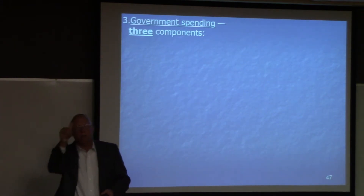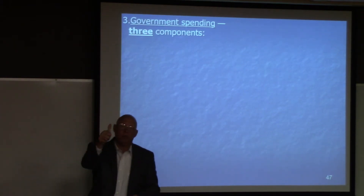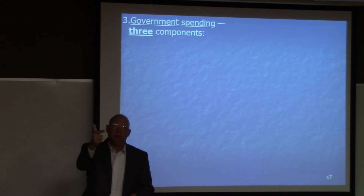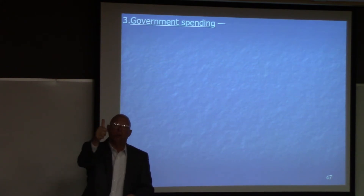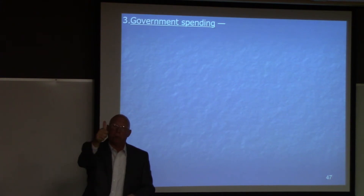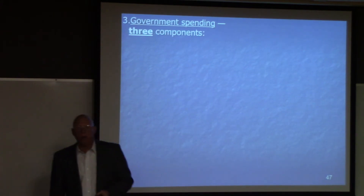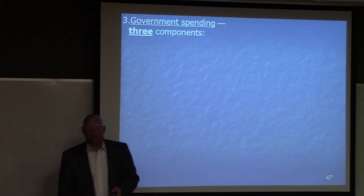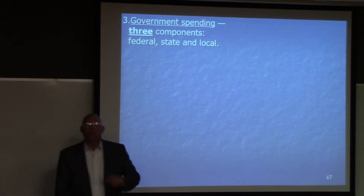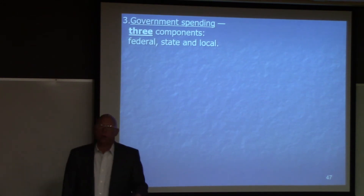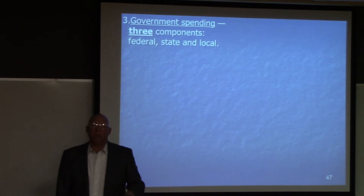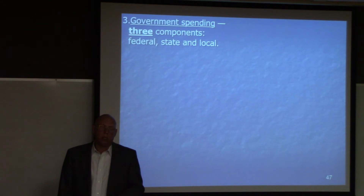Now we have government spending. To recap: consumption covers durables, non-durables, and services; investment covers property, plant, equipment, and housing. Government spending has three components: federal government, state government, and local government — three levels of taxation as well. The federal government spending is by far the largest component.